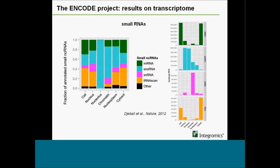Small RNAs have been investigated across different cellular compartments. Looking at the respective contribution of different categories to total expression: in cytosol you have a lot of transfer RNAs, microRNAs, and snoRNAs. In nucleolus most short RNAs are small nucleolar RNAs — consistent with previous knowledge. For microRNAs, most are enriched in cytosol, while small nucleolar RNAs are more enriched in the nucleus.